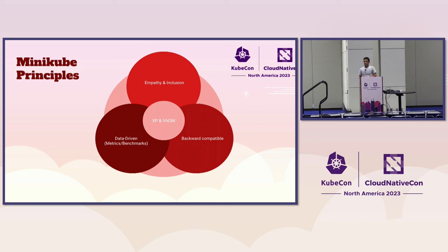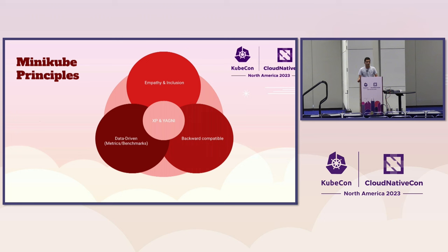When I started working on Minikube, I developed a set of principles I've been following to lead this project. Some are familiar from Unix principles, XP, and YAGNI — You Aren't Gonna Need It — and Extreme Programming. Another principle has been backward compatibility: if users rely on something, don't change it, because what looks like a bug may have become a feature to others. And also empathy and inclusion, plus data-driven decisions.